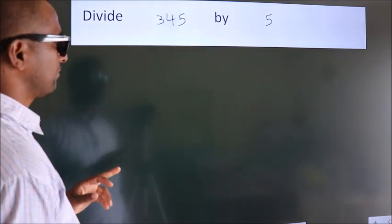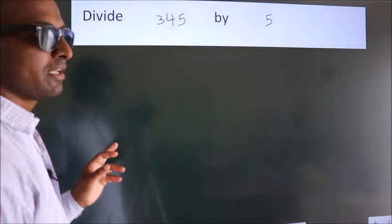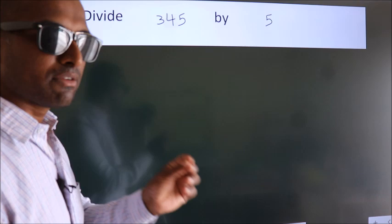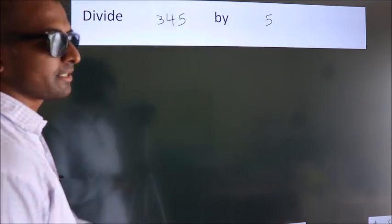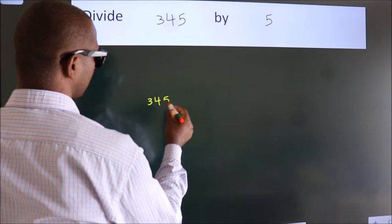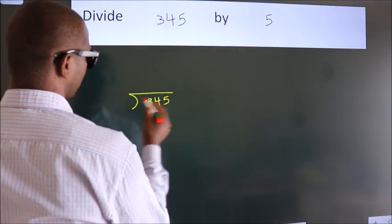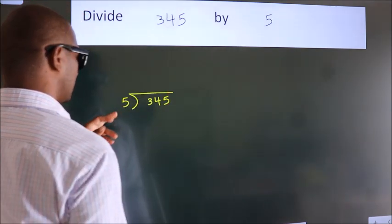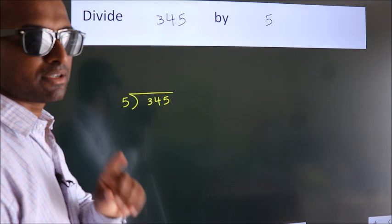Divide 345 by 5. To do this division, we should frame it in this way. 345 here, 5 here. This is your step 1.